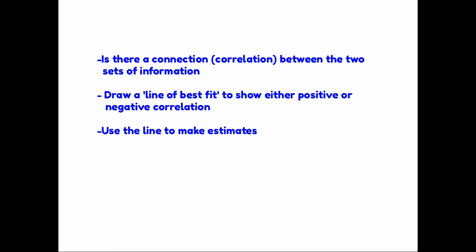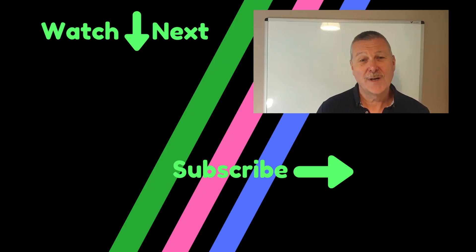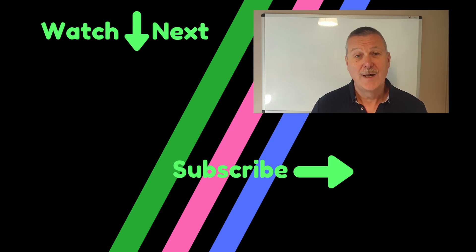A quick summary then: you are given a graph with two sets of information. Your first job is to decide is there a connection, a correlation, between the two sets of information. If you think there is, can you draw a line of best fit to show either positive or negative correlation? Don't forget your line will not be exactly in the same place as someone else's, but as long as you have drawn it through the center of the correlating pattern, you'll be fine. Once you've got your line, you can then use it to make estimates. I hope that was okay. Please do subscribe to my channel if you found that useful. I have lots of other videos and I do try to bring new ones out on a regular basis.